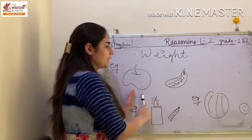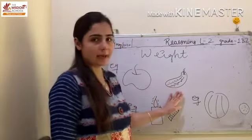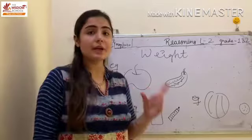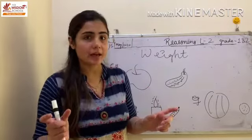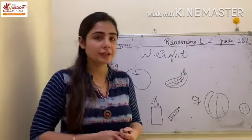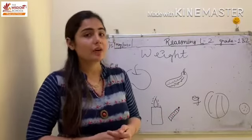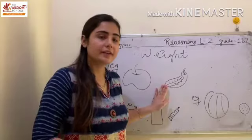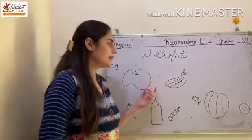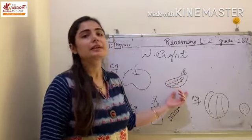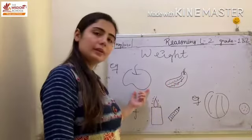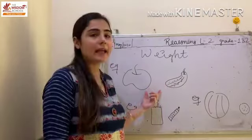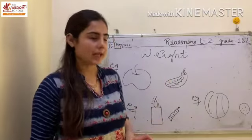Ab hum in dono mein se dekhenge — ek apple hai aur ek banana hai. Apple aur banana mein se, we can clearly identify — apple jada heavy hota hai aur banana definitely aap sab ne yeh dono fruit eat ki honge, right? Apple bhi eat kiya hoga aur banana bhi. Apple is always heavier than banana. Right? Aur we can also say banana is lighter than apple.